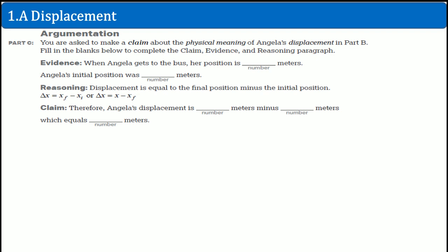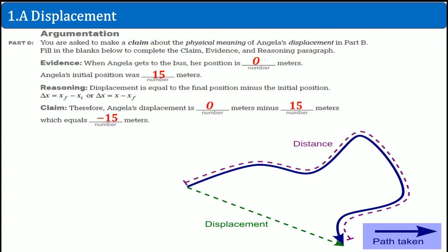The evidence: When Angelica gets to the bus, her position is at zero meters. Because Angelica's initial position was at 15 meters, and this is from the point of view of the bus, the displacement is equal to the final position minus the initial position. That is correct. Therefore, Angelica's displacement is zero meters minus 15, which equals negative 15 meters. That is what her displacement is.